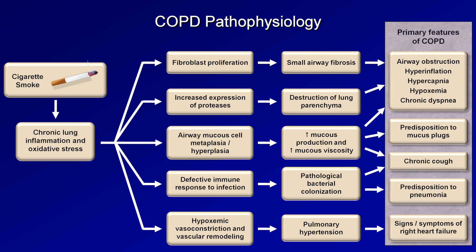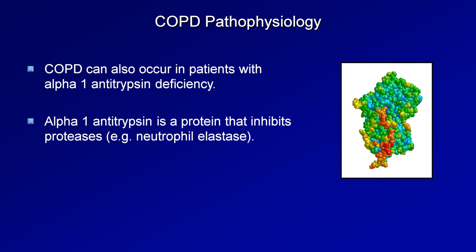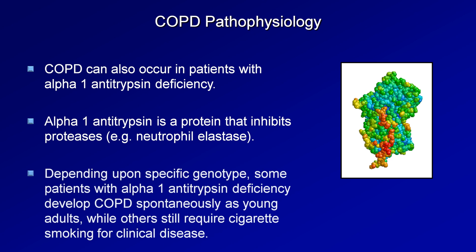Collectively, these consequences comprise the primary features of COPD. It's important to note that some patients develop COPD without smoking, in whom the pattern of pathophysiology may be slightly different. For example, patients with the genetic disease alpha-1 antitrypsin deficiency — alpha-1 antitrypsin is an inhibitor of proteases released by neutrophils, particularly neutrophil elastase. When a patient has a deficiency of this inhibitor due to a defective gene, the result may be destruction of lung parenchyma as the predominant or even sole pathologic change. Depending upon genotype, emphysematous changes may occur spontaneously in young adulthood or only if the patient begins smoking. Some patients develop COPD despite no smoking history and no alpha-1 antitrypsin gene problems; the pathogenesis in these individuals is not as well understood.